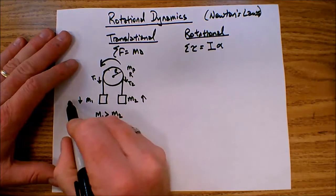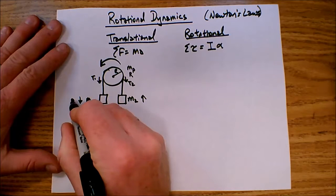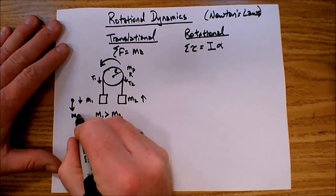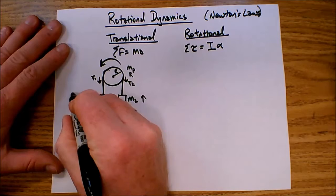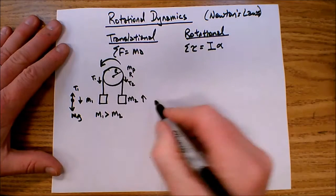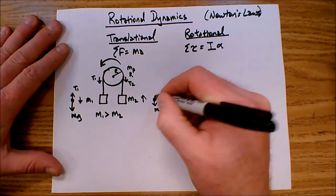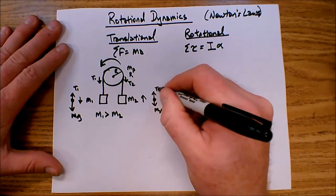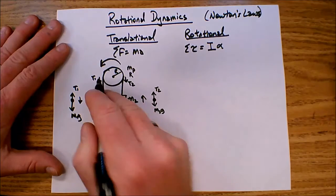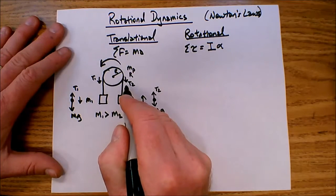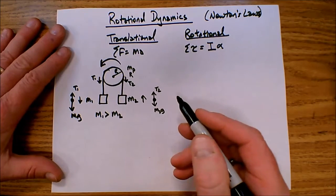So for M1 I've got force M1G down and T1 up. For M2 I've got M2G down and T2 pulling up. Then on the pulley, I've got T1 pulling down and T2 also pulling down on that side as well.